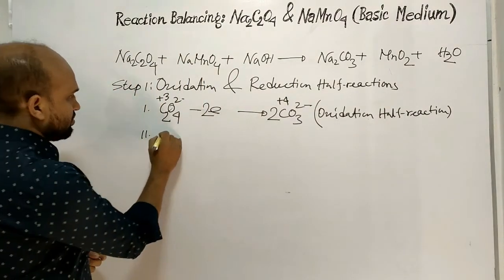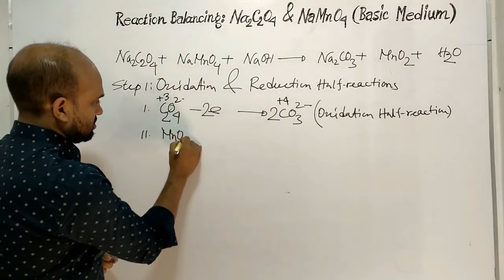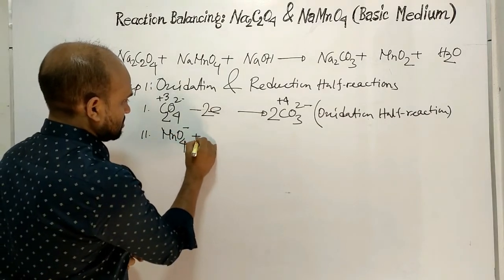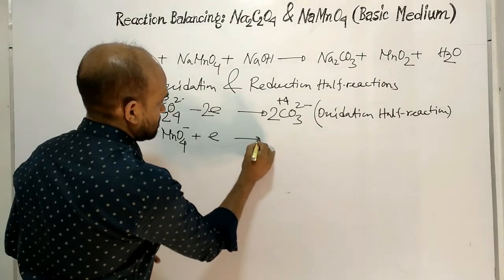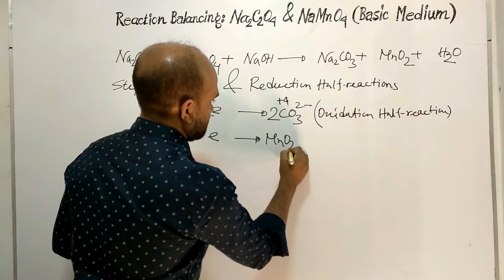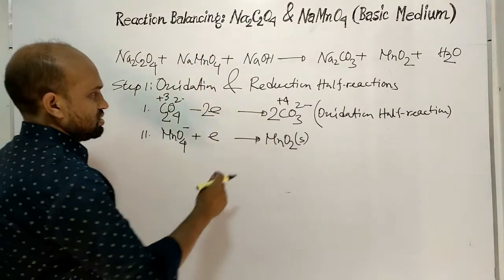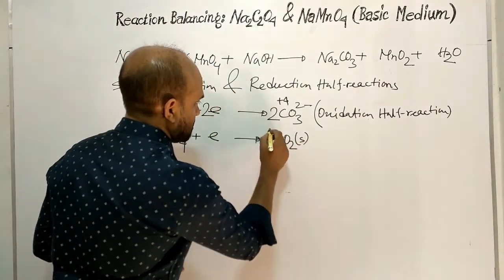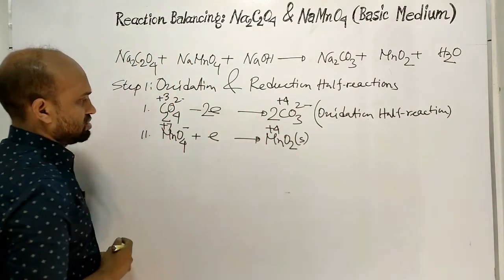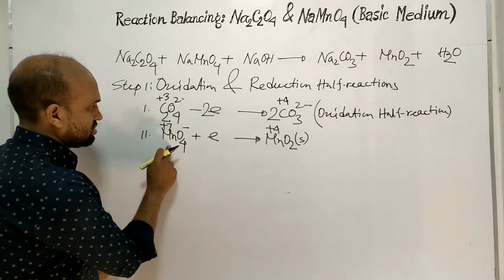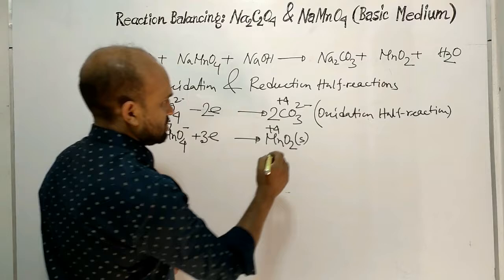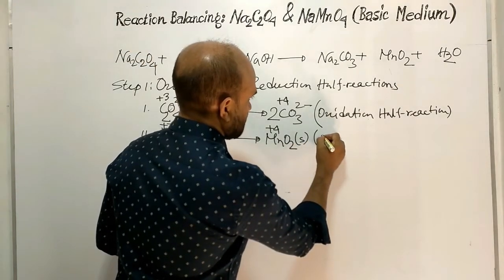Equation 2 (reduction half-reaction): Permanganate ion accepts electrons and is converted to manganese dioxide (solid). The oxidation number of manganese goes from plus 7 to plus 4, so permanganate gains 3 electrons. In equation 1, there are 6 oxygen atoms on the left and 4 on the right. In equation 2, there are 4 oxygen atoms on the left and 2 on the right.